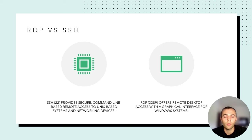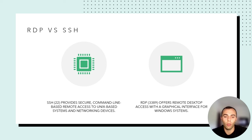Let's compare RDP with SSH. SSH, which operates on port 22, provides secure command-line-based remote access to Unix-based systems and networking devices. In other words, one Linux machine might be able to connect to another Linux using SSH, and it is all through the command line. RDP, operating on port 3389, is a proprietary Windows/Microsoft application that offers remote desktop access with a graphical interface.